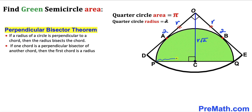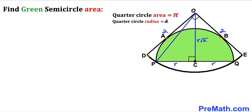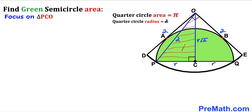PC is the radius of the semicircle — lowercase r — and QC is also radius r. PQ is a chord on the quarter circle. By the perpendicular bisector theorem, if the radius of the quarter circle bisects this chord, then the angle must be 90 degrees. Connecting point P with center O, we see OP is the radius of the quarter circle, which equals 2. Let's focus on right triangle PCO.